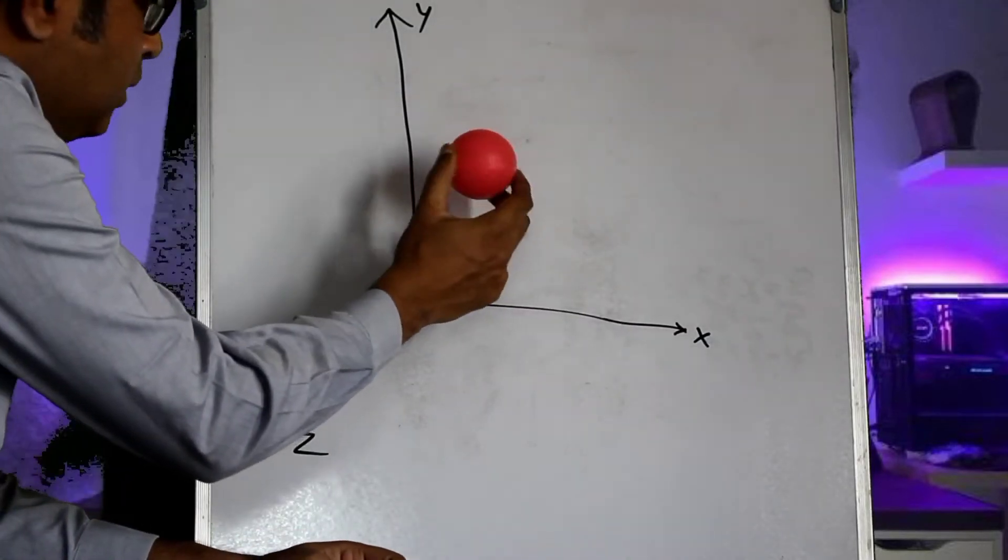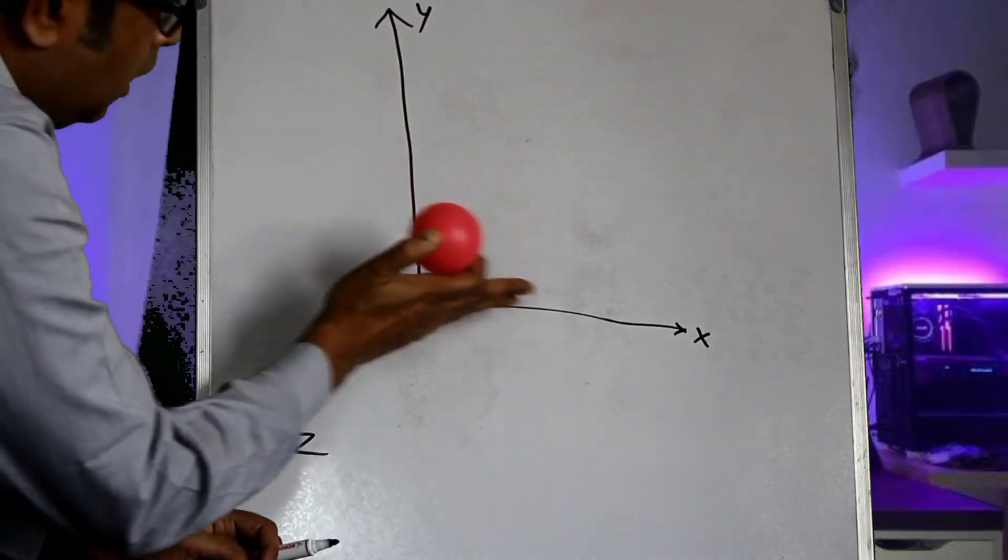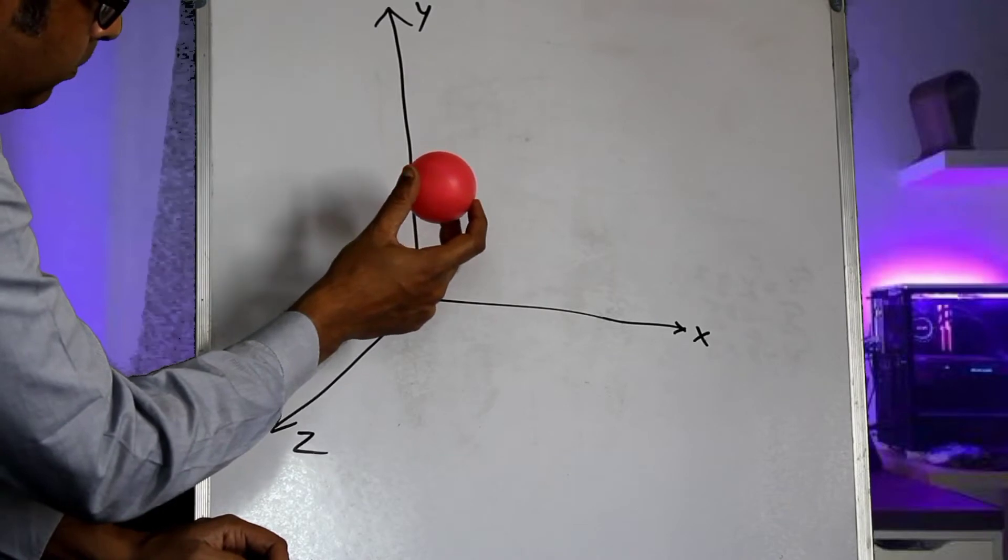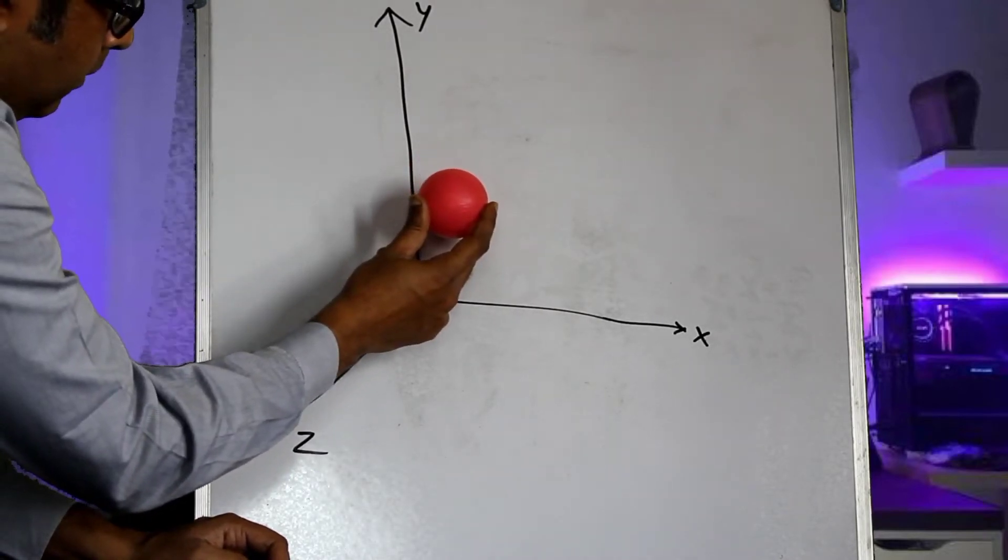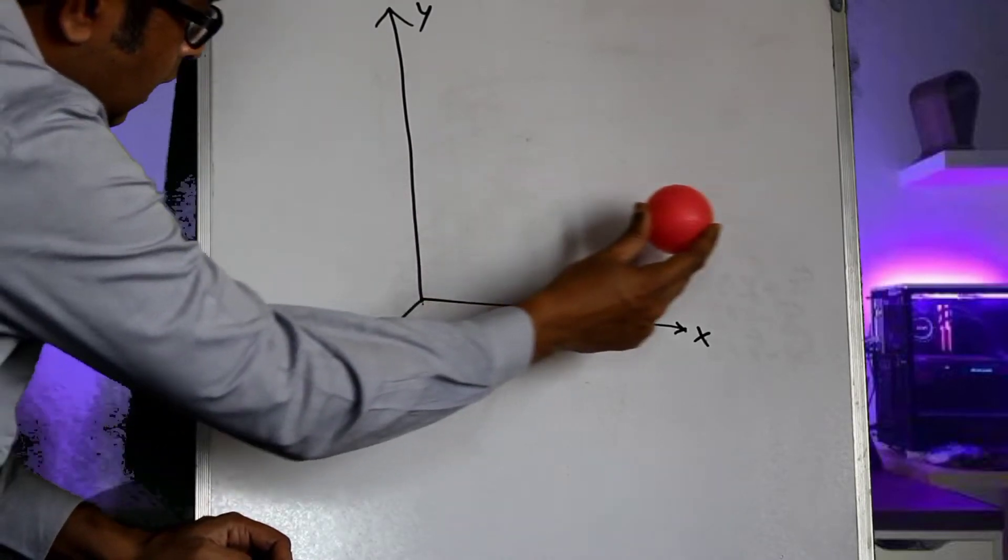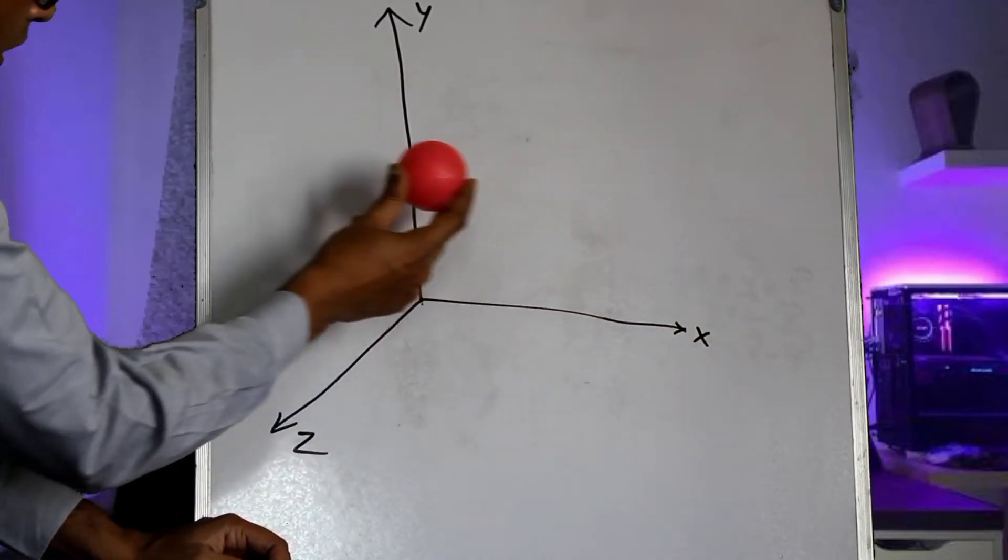Let us consider this weightless ball with respect to the global x, y, and z axis. Now this ball can move in the positive direction and the negative direction of x axis.